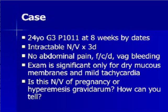Let us discuss a case. A 24-year-old woman, G3P1011, at 8 weeks by dates, presents with intractable nausea and vomiting for 3 days. She has no abdominal pain, fever, chills, diarrhea, or vaginal bleeding. Her physical examination is unremarkable except for dry mucous membranes and a heart rate of 110. Is this simple nausea-vomiting of pregnancy, or is this hyperemesis gravidarum?